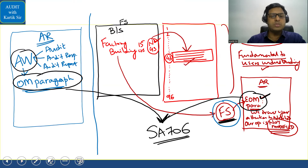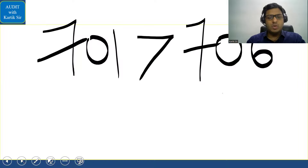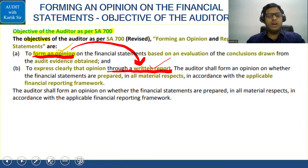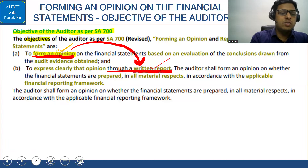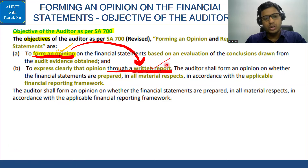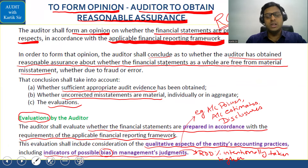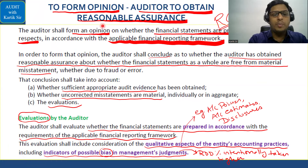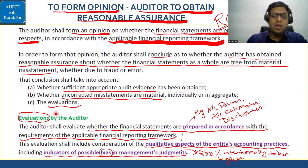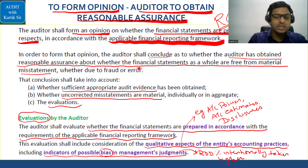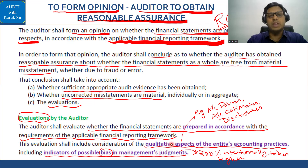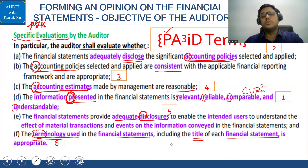In SA 700, the auditor forms an opinion on whether the financial statements are prepared in all material respects as per the applicable financial reporting framework (AFRF). The auditor evaluates whether financial statements are prepared as per AFRF, the qualitative aspects of the entity's accounting practices, and any possibility of management bias. There is a code called PAID TERM: P is for presentation — whether it is Comparable, Understandable, Relevant, and Reliable. Then whether accounting policies are adequately disclosed, consistently applied, and accounting estimates are reasonable.